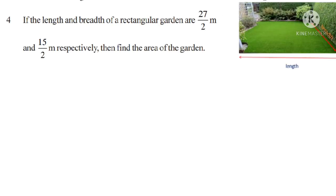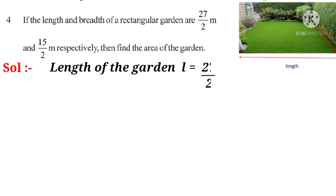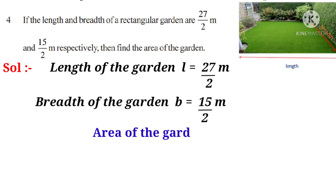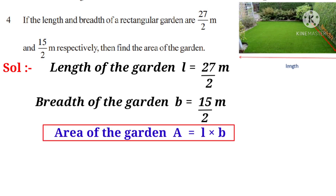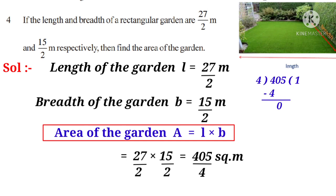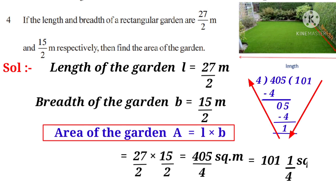Problem 4: If the length and breadth of a rectangular garden are 27/2 meters and 15/2 meters respectively, find the area. Length L = 27/2 m, Breadth B = 15/2 m. Area = L × B = 27/2 × 15/2. Numerator: 27 × 15 = 405; denominator: 2 × 2 = 4. Dividing 405 by 4: quotient 101, remainder 1. So area = 101 and 1/4 square meters.